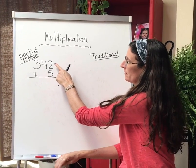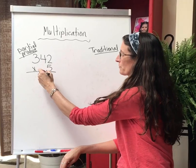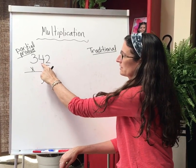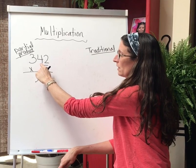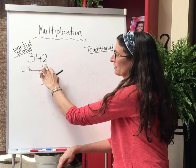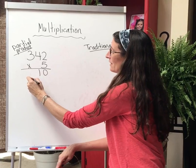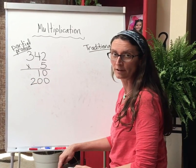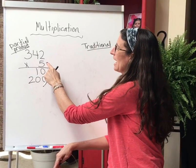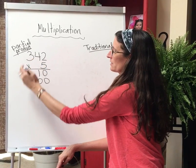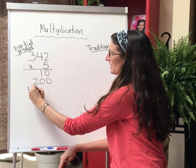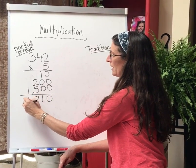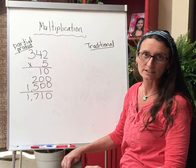So this first one: 5 times 2 is 10. 5 times 4 tens is 20 tens, or 200. 5 times 40 is 200 and 5 times 300 is 15 hundreds. Then I can add things up and I have 1,710.